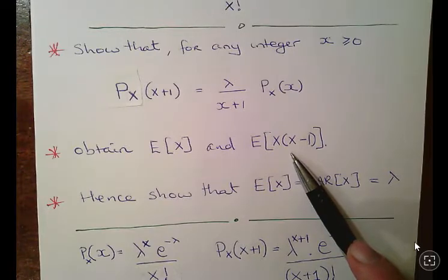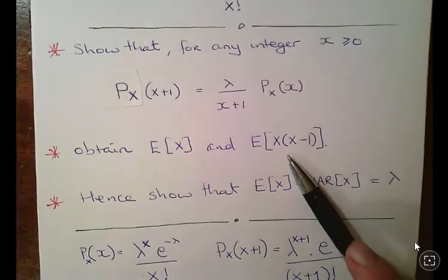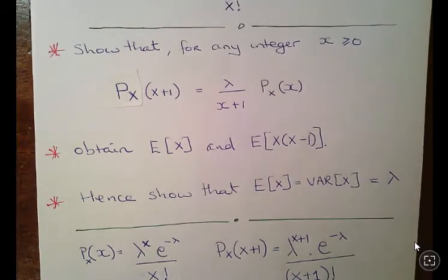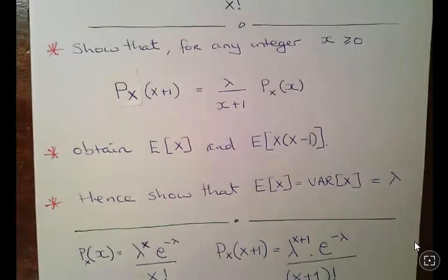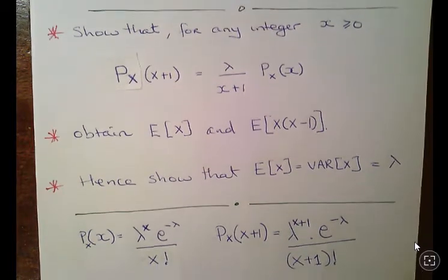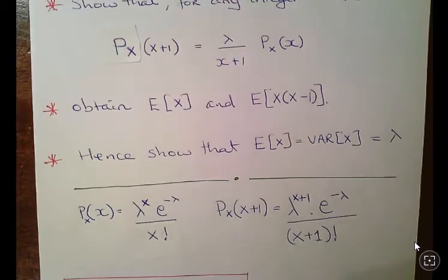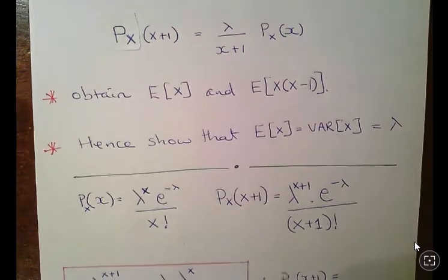You might wonder why we use that one — I'll come to that shortly. Then we have to show that the expected value of x is equal to the variance of x, which is equal to lambda.